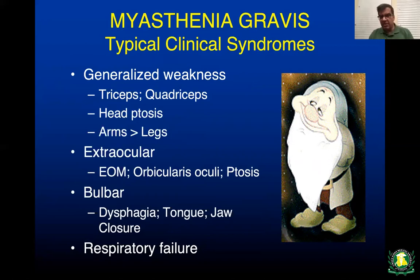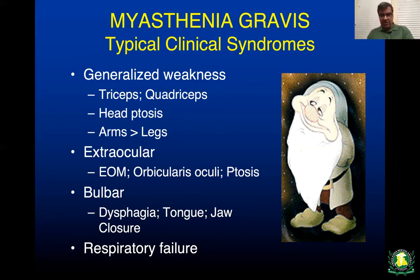Head ptosis or head drop is very common, and arms in general are much more affected than the legs. Extraocular muscles, because they have a low fatigue index, tend to get affected much more easily. Bulbar muscles — especially speaking difficulty and swallowing difficulty — can also manifest as part of the myasthenic syndrome. Respiratory failure can happen, and it's not unusual for some patients with subclinical myasthenia gravis to manifest for the first time after surgery, having difficulty coming off a ventilator.